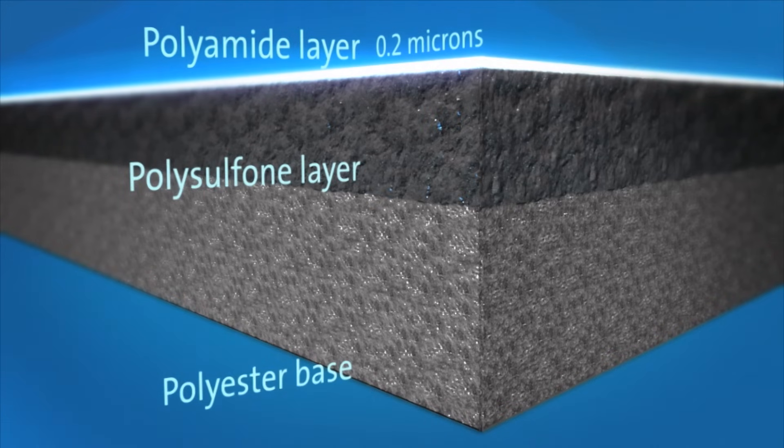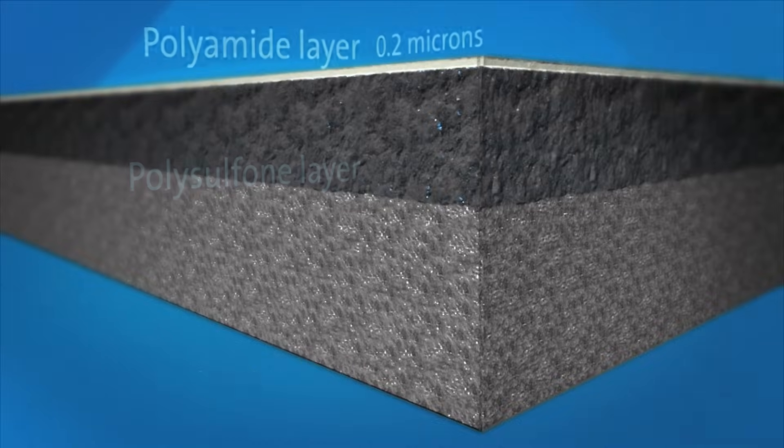The polysulfone layer strengthens the very thin barrier layer. It is the barrier layer that removes nutrients, chemicals, bacteria, and viruses from the water.